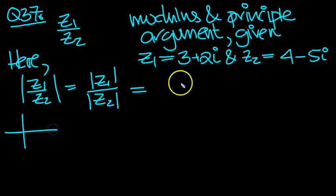Now if we do a little sketch of these, z1 is 3 and 2, so it's just about there. So this is 2 and this is 3. So this modulus here is 9 and 4 is 13, so it's root 13.